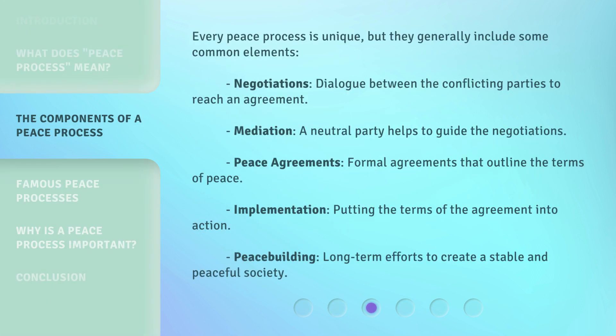Every peace process is unique, but they generally include some common elements. Negotiations: dialogue between the conflicting parties to reach an agreement. Mediation: a neutral party helps to guide the negotiations. Peace Agreements: formal agreements that outline the terms of peace. Implementation: putting the terms of the agreement into action. Peacebuilding: long-term efforts to create a stable and peaceful society.